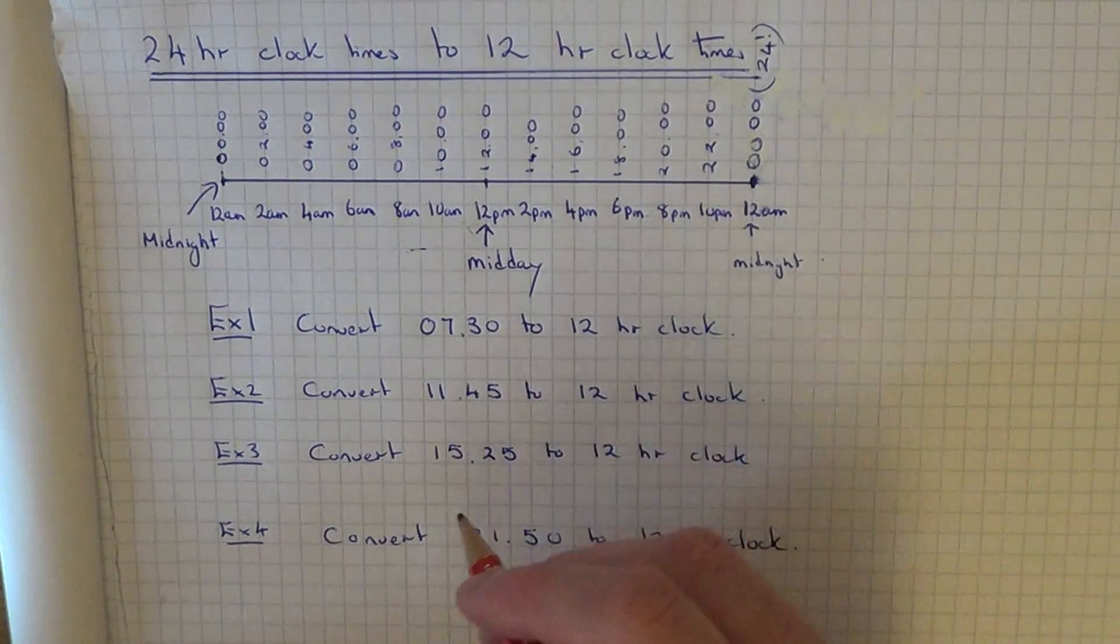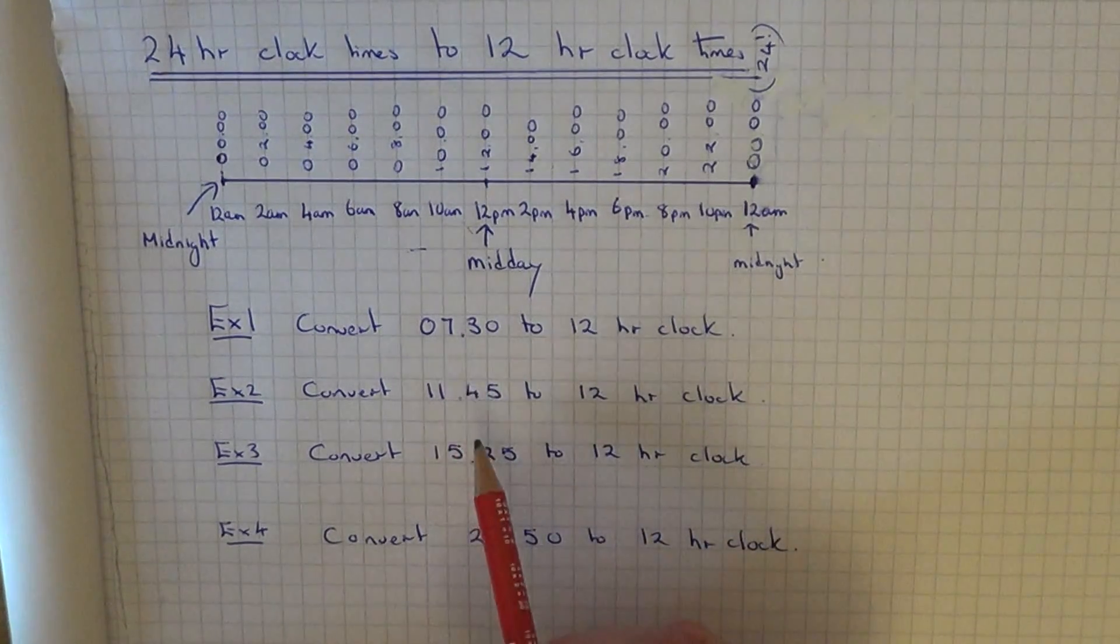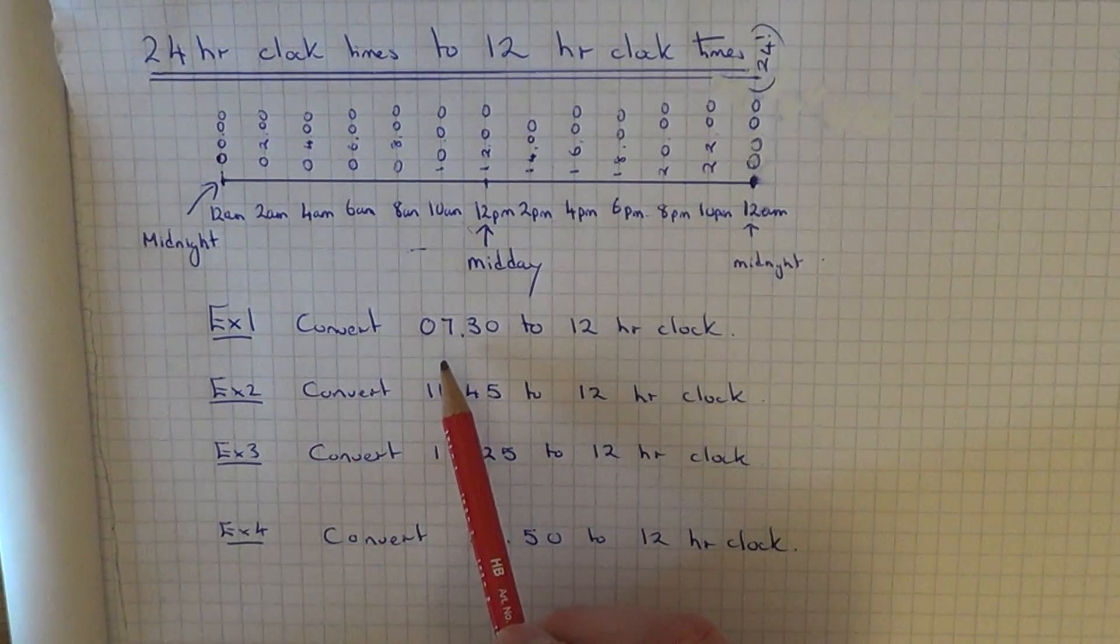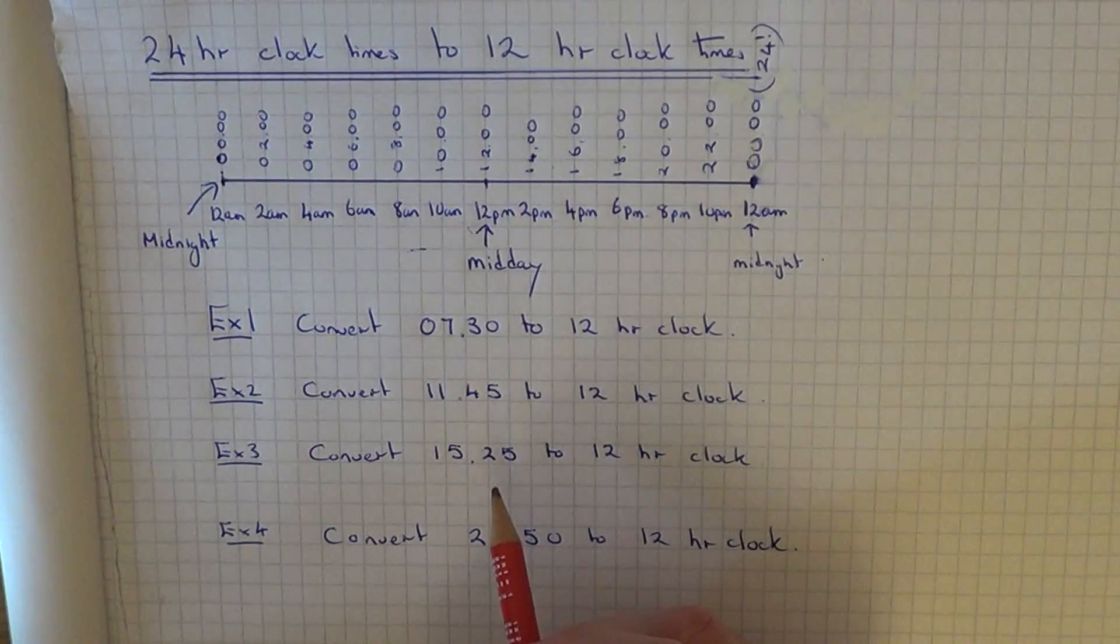Let me just quickly show you some examples on how to change the 24-hour clock times into 12-hour clock times. Example 1, we have to convert 07:30 to 12-hour clock.